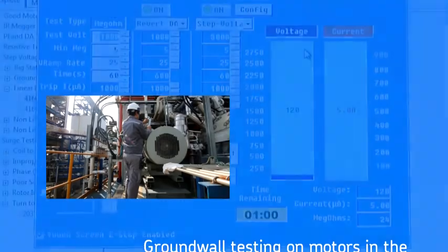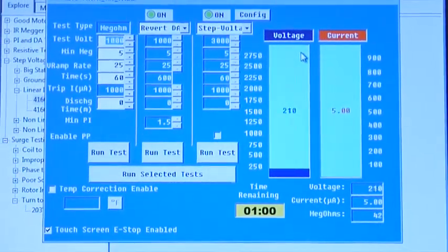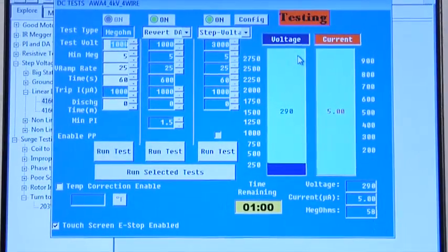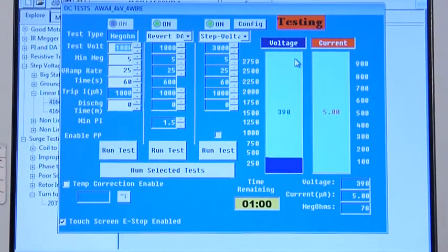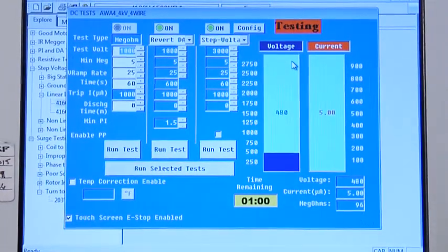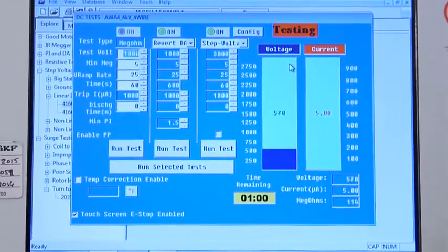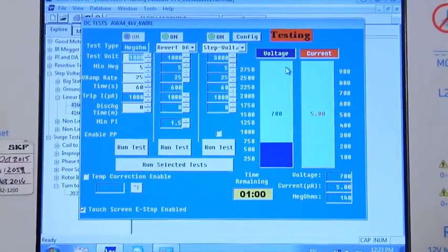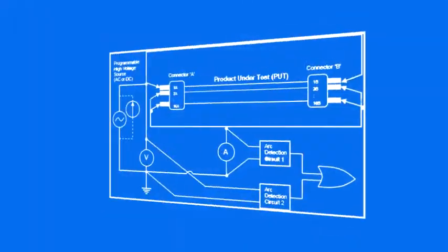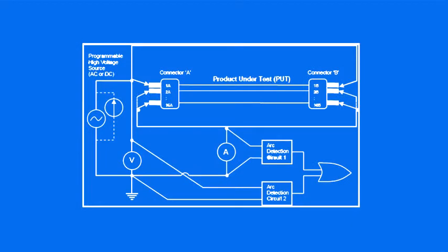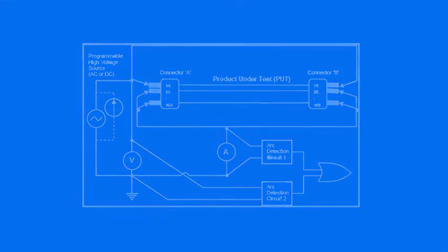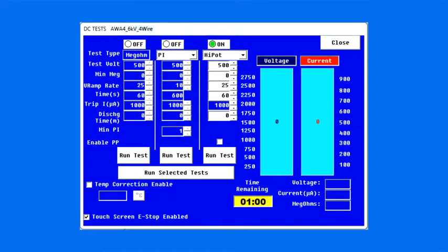A mega test or megohm test typically tests the ground wall insulation at or below the motor operating voltage. This has limited value as insulation breaks down non-linearly as the voltage increases. A high pot test is a DC ground wall insulation test but run at a higher voltage.